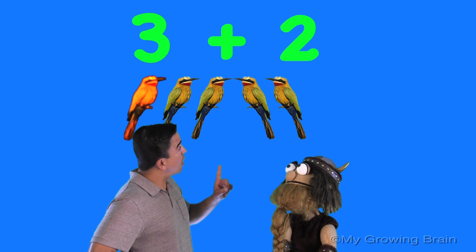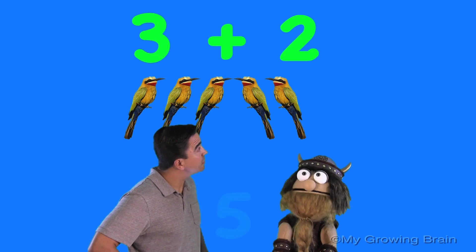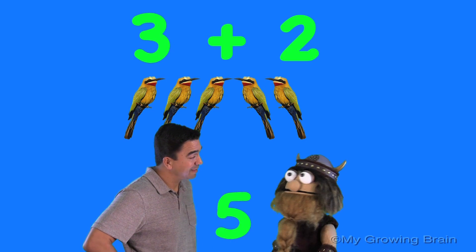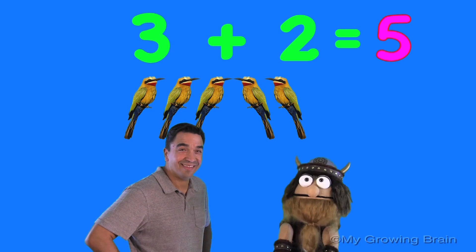One, two, three, four, five. So, three plus two is five.